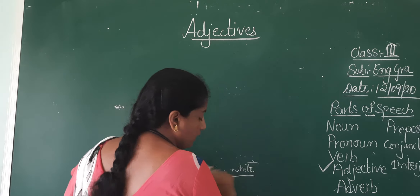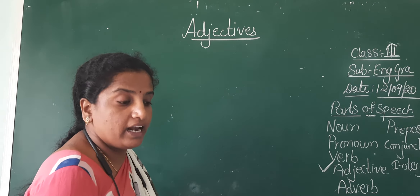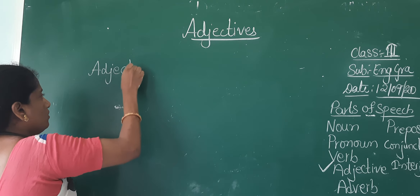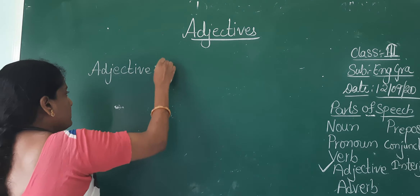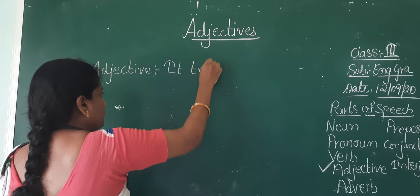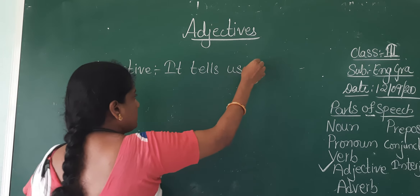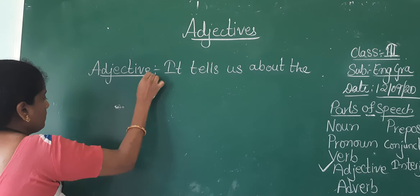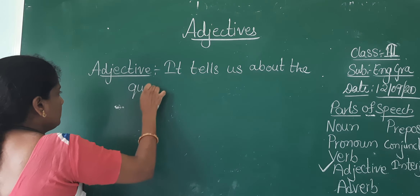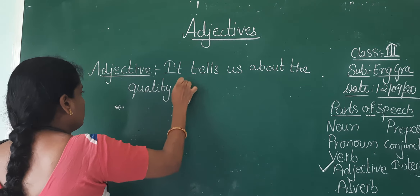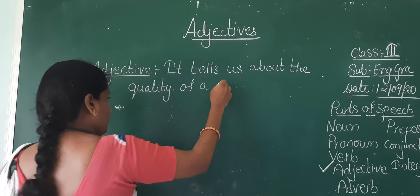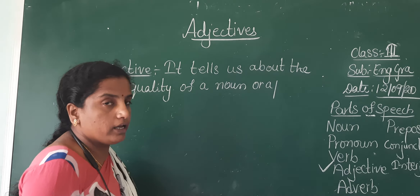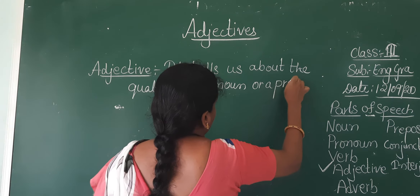So how can we define an adjective? An adjective tells us about the quality of a noun or a pronoun.